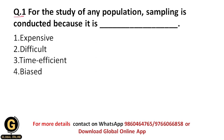Question one: For the study of any population, sampling is conducted because it is — what? Whenever a researcher wants to study any population, he does sampling. Sampling means taking out some samples from the population for the study. Why is this essential? The options are: whether it is expensive, whether it is difficult, whether it is time efficient, or whether it is biased.